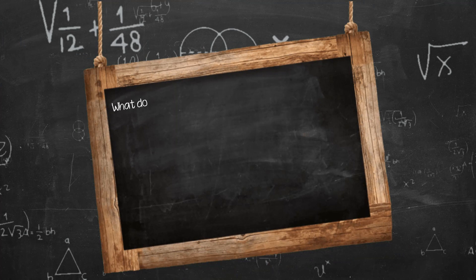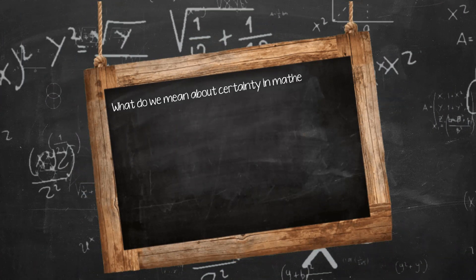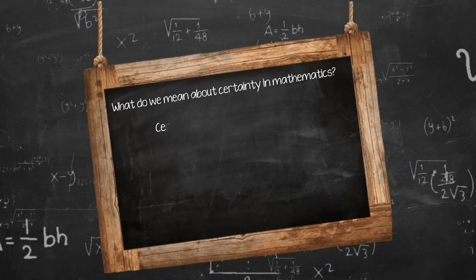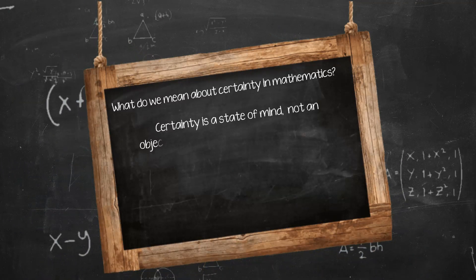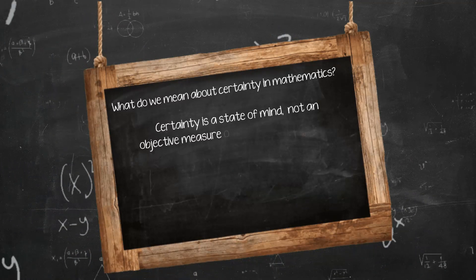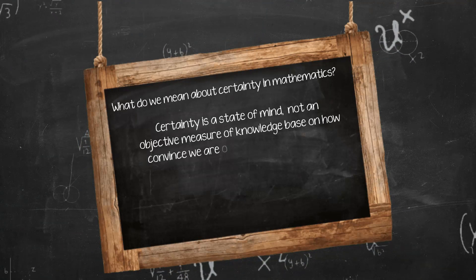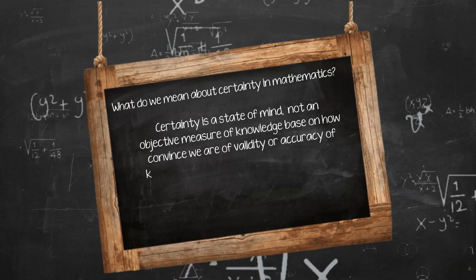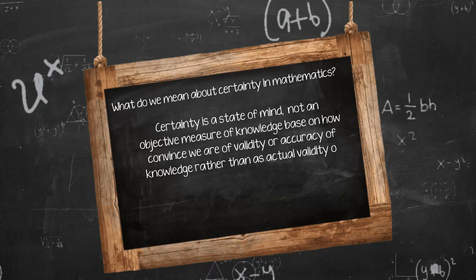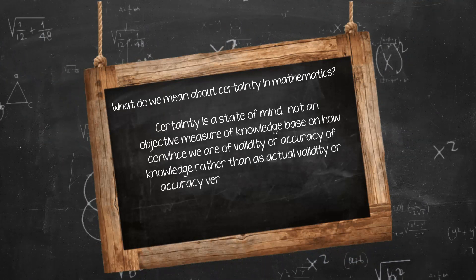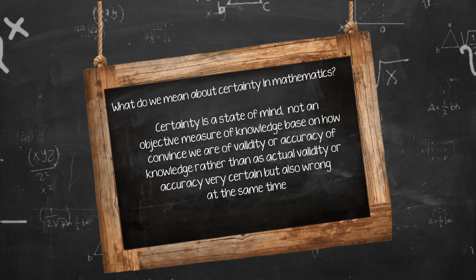What do we mean by certainty in mathematics? Certainty is a state of mind, not an objective measure of knowledge. It is based on how convinced we are of the validity or accuracy of knowledge, rather than its actual validity or accuracy — meaning we can be very certain but also wrong at the same time.